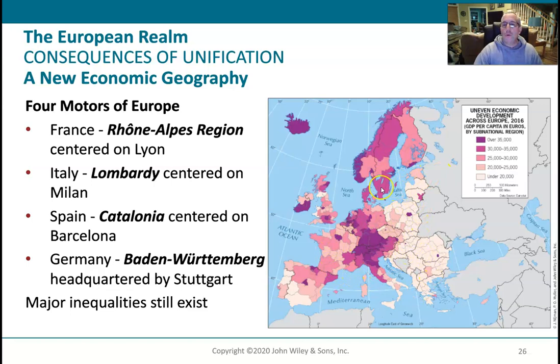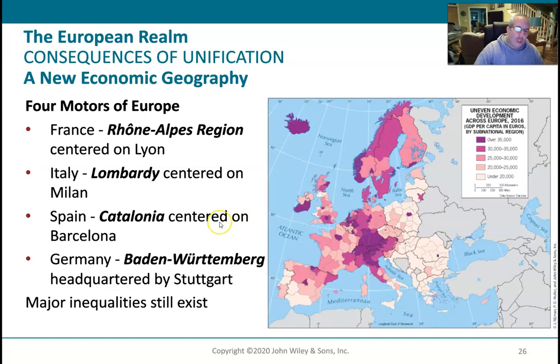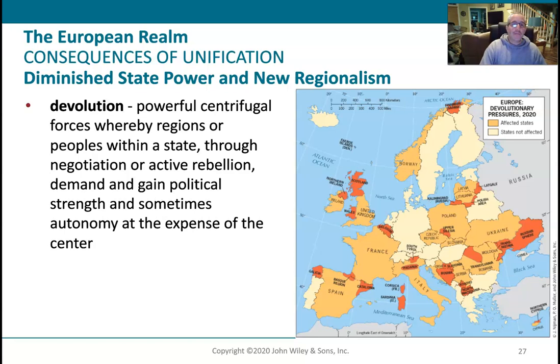These colors represent gross domestic product — basically how wealthy these areas are. Eastern Europe is very poor; the central area, mostly Germany, does pretty well. When you have this inequality, it's just like domestic politics — people don't want their taxes going to support others. Think about doing that with 40 different countries. Of course that's going to be taxing on some people, and the more countries you try to bring in, the more difficult it's going to be for everybody to get along.